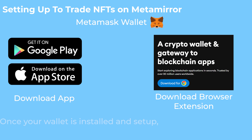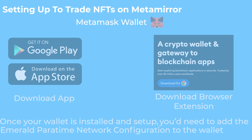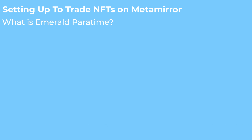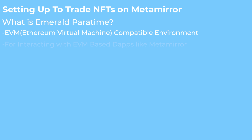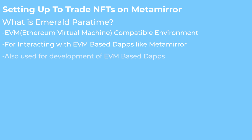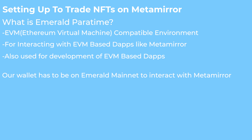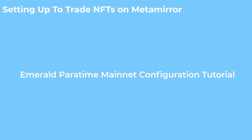Once your wallet is fully set up, you need to add the Emerald Paratime network configuration to MetaMirror. The Emerald Paratime is an EVM-compatible environment for interacting with EVM-based apps and platforms like MetaMirror. We would need to be on Emerald to interact with MetaMirror. At this point in the video, the process of configuring Emerald on both mobile and web versions of MetaMirror will be displayed side by side on the screen with written instructions to follow. So take a moment to follow these instructions that apply to your device, and feel free to pause, rewind, or slow down the video to observe again.